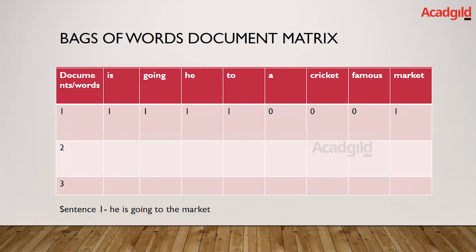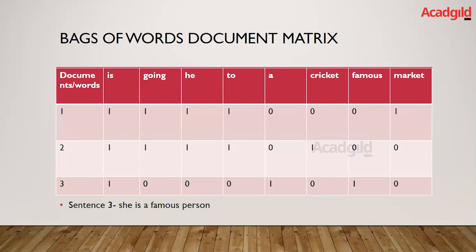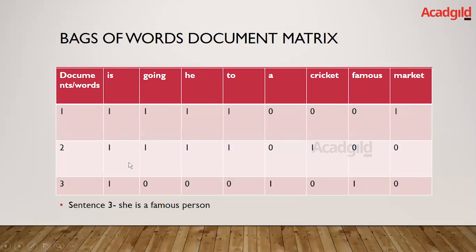For sentence two — 'he is going to play cricket' — we apply the same strategy and populate values based on the columns. Note that if a keyword appears more than once in a sentence, its count is incremented accordingly rather than staying at one. For sentence three — 'she is a famous person' — whichever words are present in the columns are incremented, and the remaining words have a value of zero. This document matrix is essential for the model to understand, as the model works with integers and numerical values, not text.